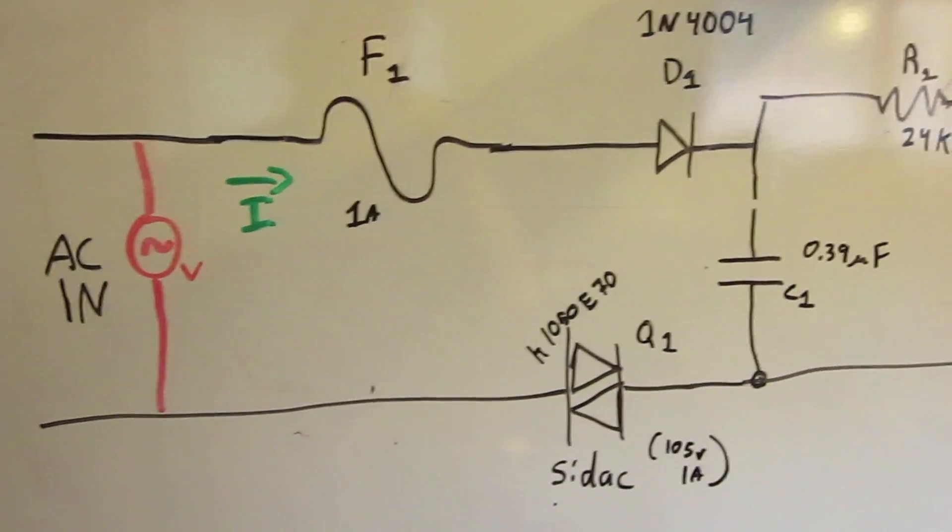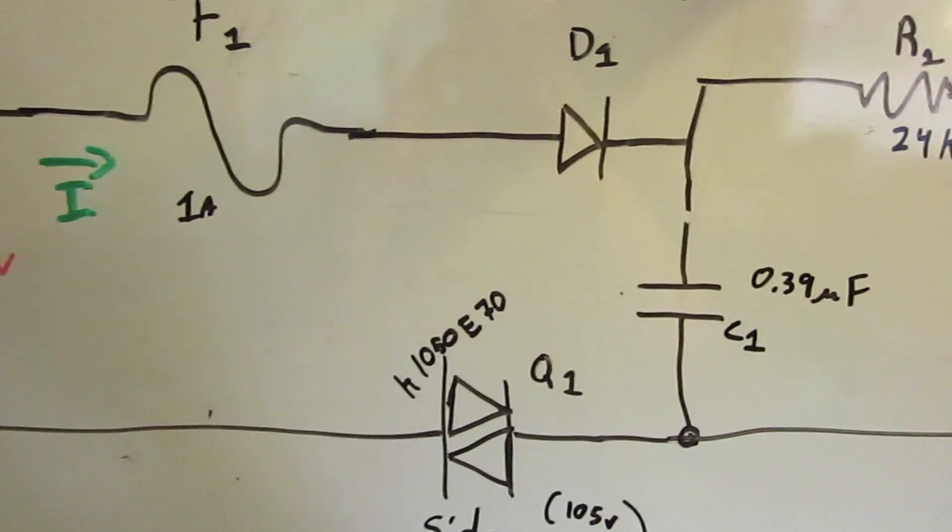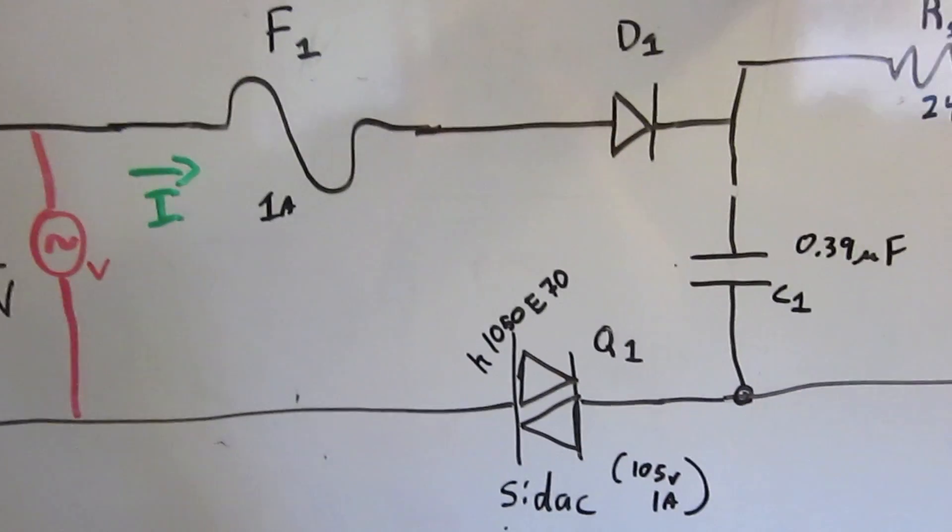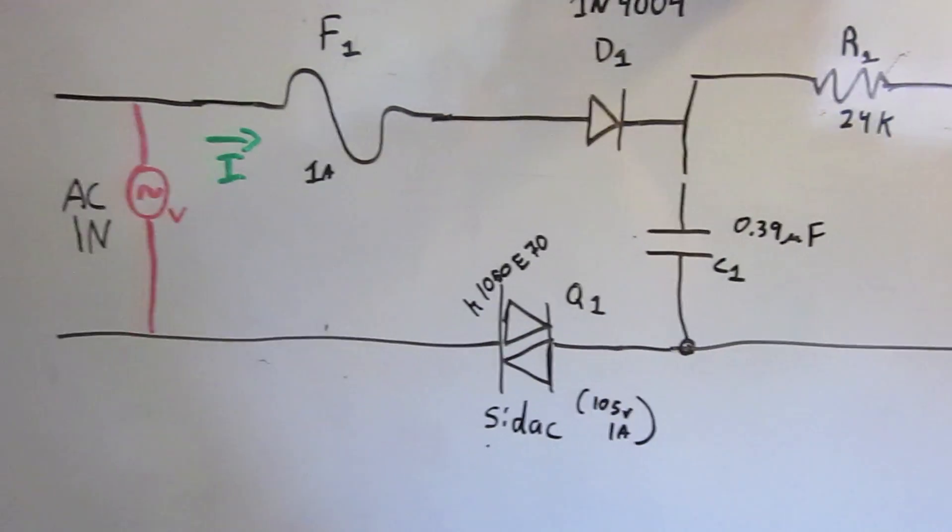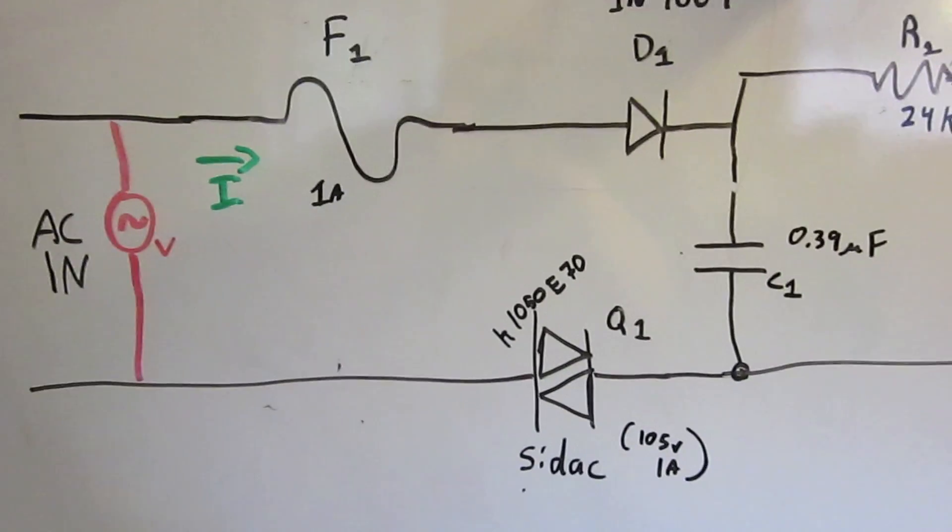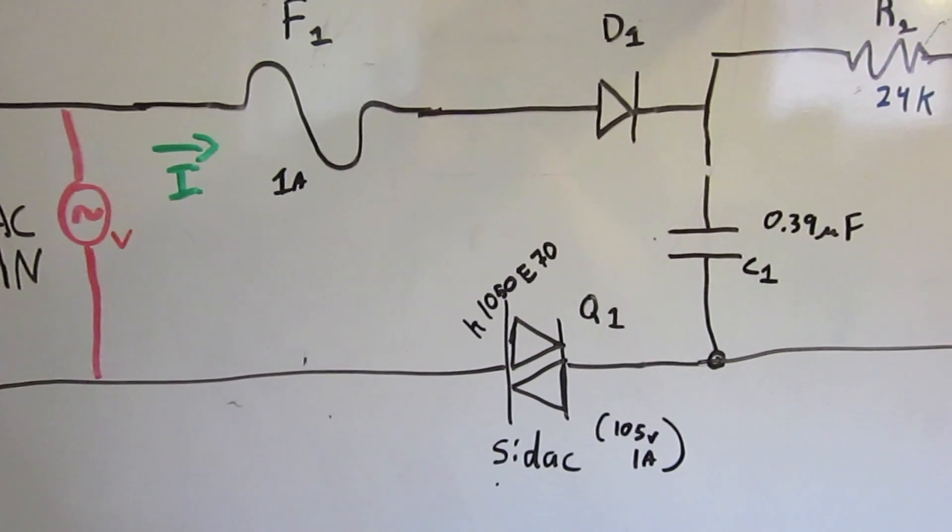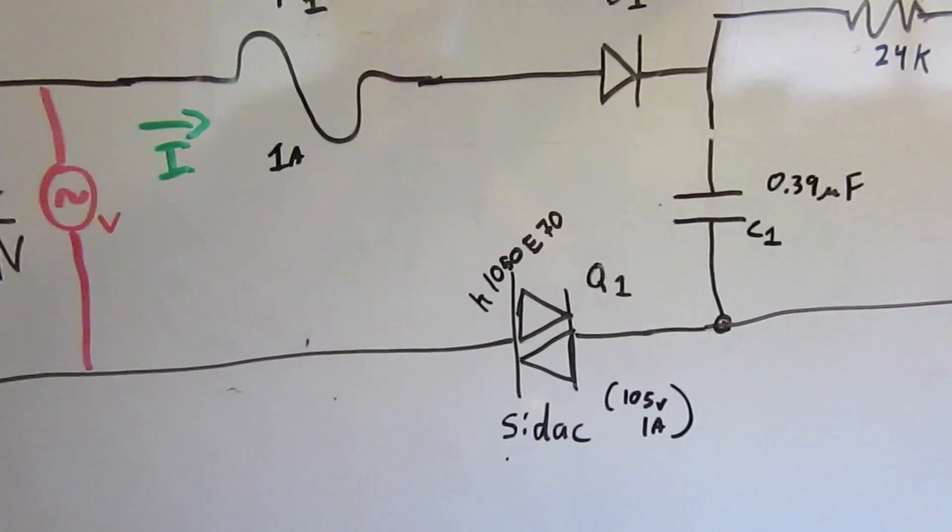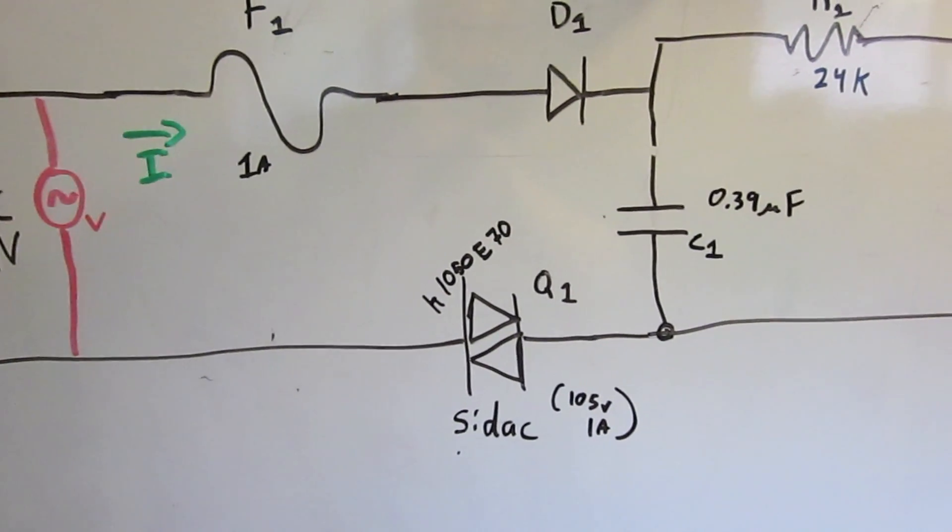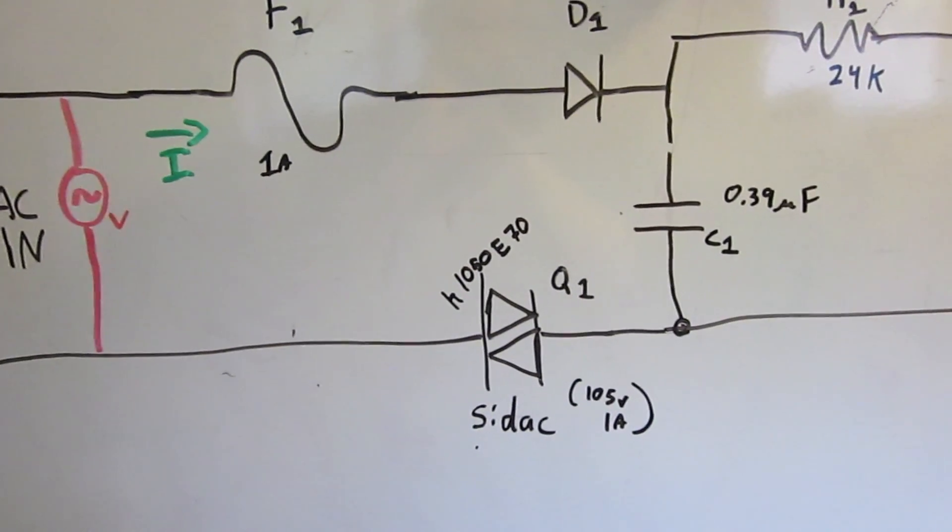So if we go back to the diagram, you can see that in series with the SIDAC and the rectifying diode is a 0.39 microfarad capacitor. So as the voltage across that capacitor increases, eventually it's also pushing the voltage across the SIDAC. And once the SIDAC reaches 105 volts, suddenly it starts conducting.